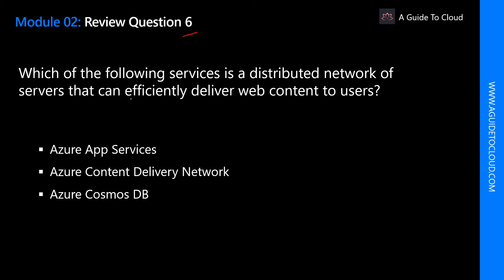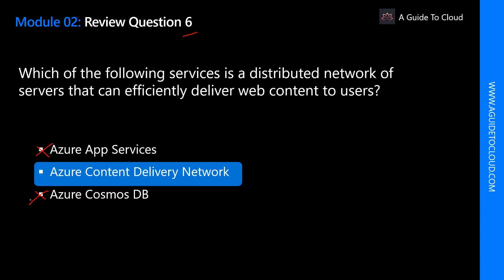Which of the following services is a distributed network of servers that can effectively deliver web content to users? Is it Azure App Service? No — Azure App Service is a platform as a service for web, mobile applications, or APIs. Is it Cosmos DB? No — Cosmos DB is a globally distributed, highly available database service. The correct answer is Azure Content Delivery Network, or CDN — a distributed network of servers that can effectively deliver web content to users.